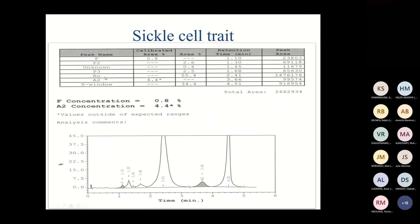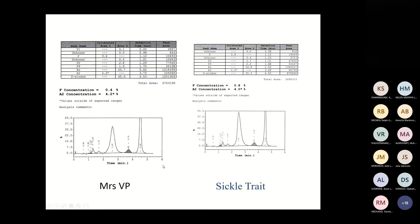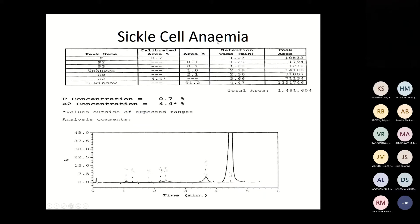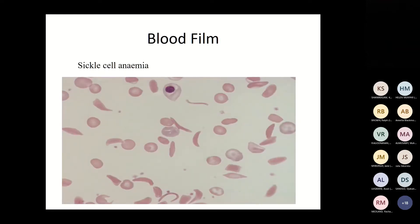In sickle cell trait on HPLC, the A window shows around 54–55% and the S window around 34%; haemoglobin A must be more than S to call it a trait. One patient had haemoglobin A and S, had never been transfused, had no sickle cells on film, but A was more than S. On investigation she had haemoglobin Adesirada running with A, causing the imbalance. In sickle cell anaemia there is no haemoglobin A at all — only S is present.